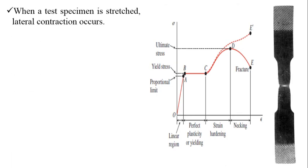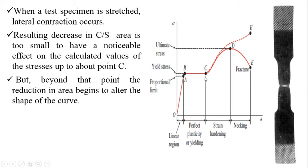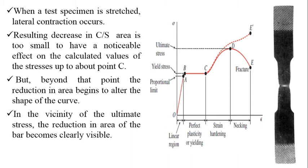When a test specimen is stretched, lateral contraction occurs and the diameter reduces. The resulting decrease in cross-sectional area is too small to have a noticeable effect on calculated stress values up to about point C. But beyond point C, the reduction in area begins to alter the shape of the curve. In the vicinity of the ultimate stress near point D, the reduction in area becomes clearly visible — we can clearly see neck formation, that is reduction in the cross-sectional area of the specimen.